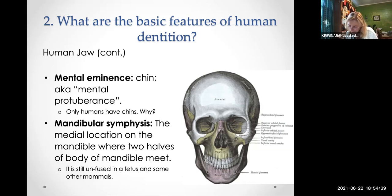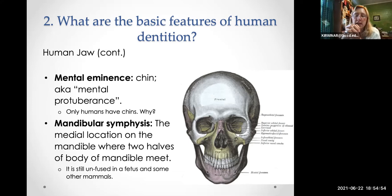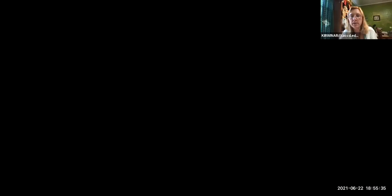The mental eminence is the chin. The mandibular symphysis is a new word referring to the medial location on the mandible where the two halves of the body of the mandible meet. It is perfectly fused in human mandibles — there's no suture — but in mammals like mountain lions, dogs, and some primitive monkeys, there is a line there. In ape skulls it's smooth like our human chin.